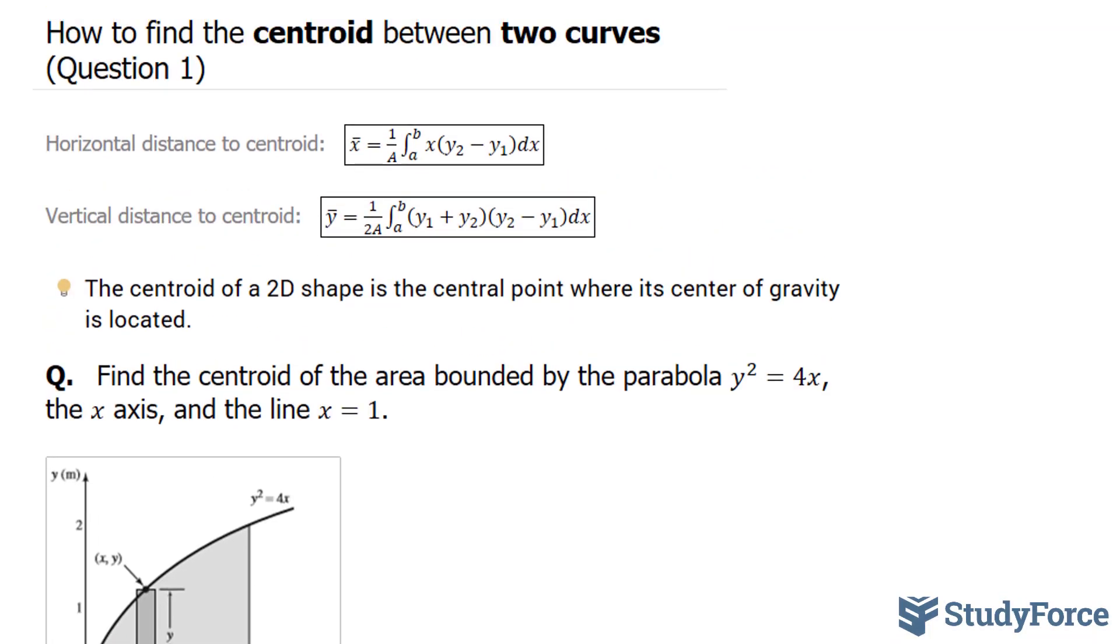To do this, we'll need to use the following two formulas where we have the horizontal distance of the centroid defined by this equation, and the vertical distance defined by this equation. Both of these formulas have the variable A. A represents the area, so that's the first thing we have to do.